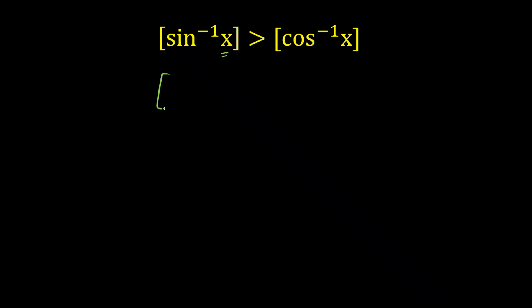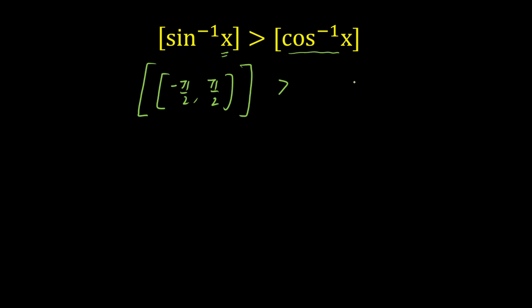Let us write the range of sin inverse of x, which is from −π/2 to π/2. We are then taking the GIF of this whole range. On the right-hand side, the range of cos inverse of x is from 0 to π, and we take the GIF of those values as well.